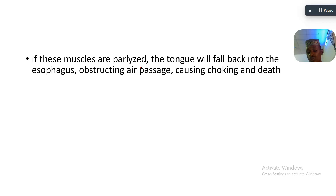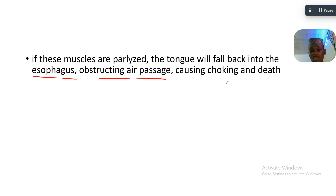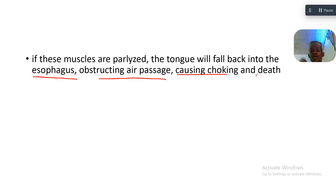The tongue will fall back into the oesophagus, obstructing the air passage, causing choking and death. The genioglossus helps to hold the tongue in its position and protrude the tongue.